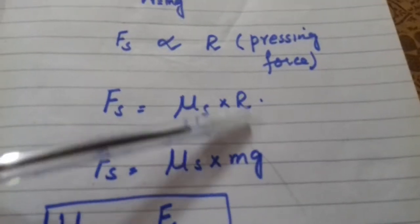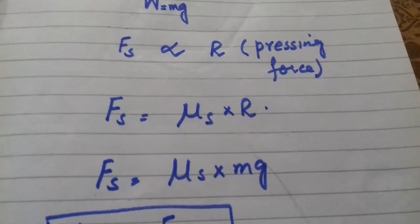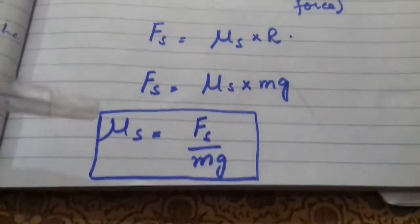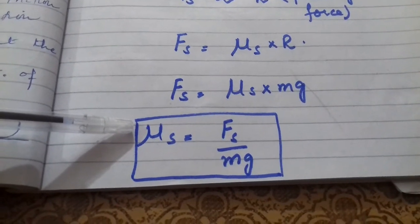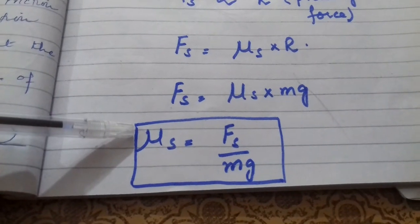We can substitute R because action and reaction forces are equal in magnitude. The coefficient of friction μs equals the ratio of the limiting friction force to the normal reaction.